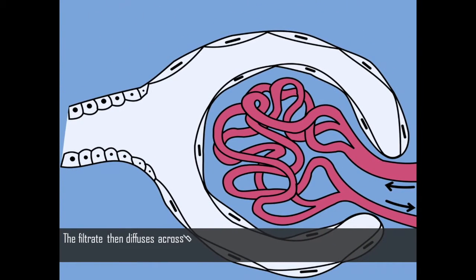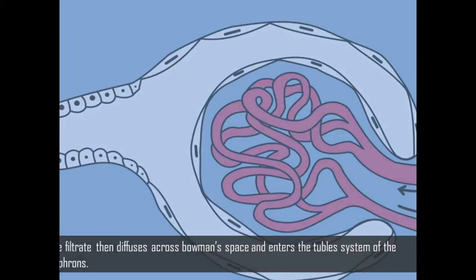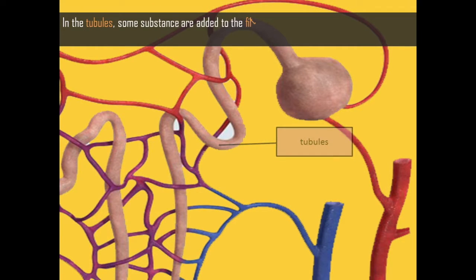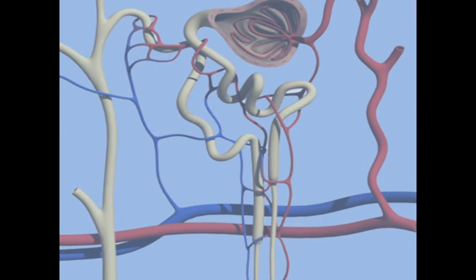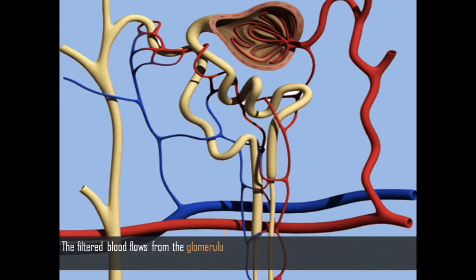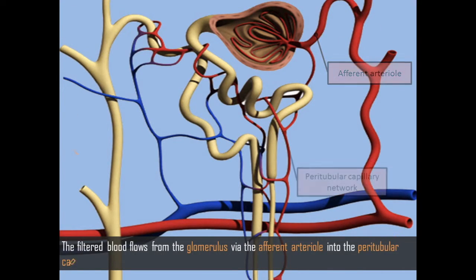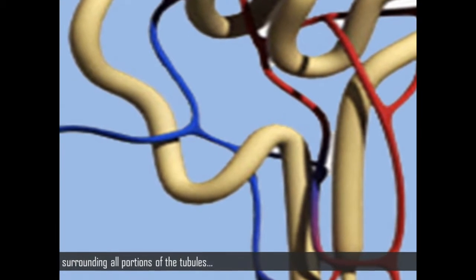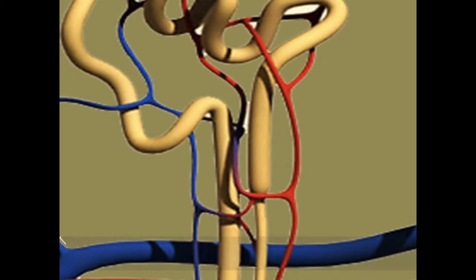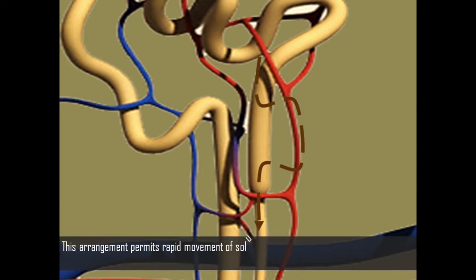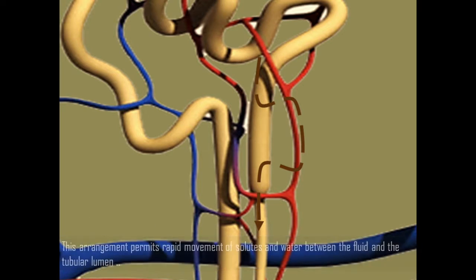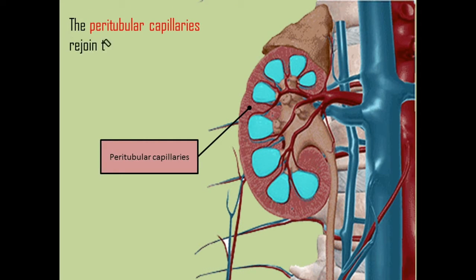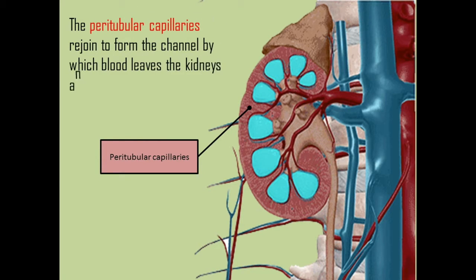The filtrate then diffuses across Bowman's Space and enters the tubule system of the nephrons. In the tubules, some substances are added to the filtrate as part of the urine, and some are reabsorbed out of the filtrate and back into the blood. The filtered blood flows from the glomerulus via the afferent arteriole into the peritubular capillary network, which is a low-pressure reabsorptive system surrounding all portions of the tubules. This arrangement permits rapid movement of solutes and water between the fluid and the tubular lumen.